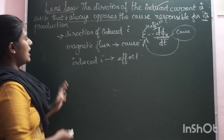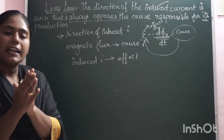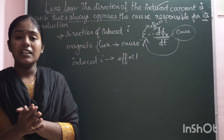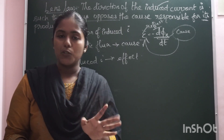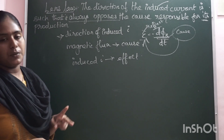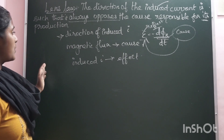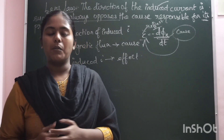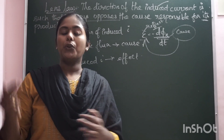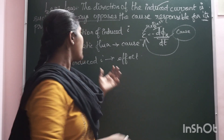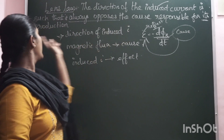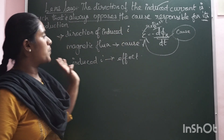So this is Lenz's Law: the direction of induced current and the magnetic flux are always opposing each other. We will give you two illustrations. The three key words are: induced current opposes the cause responsible for its production.